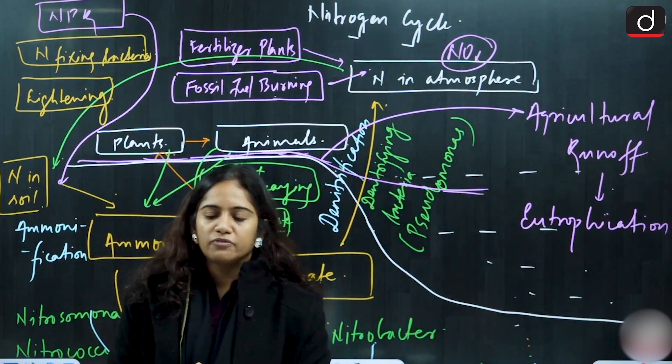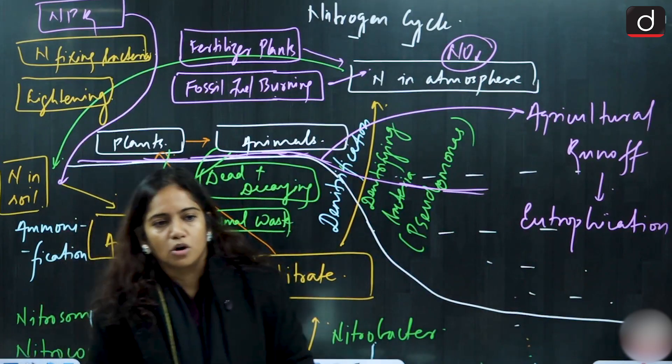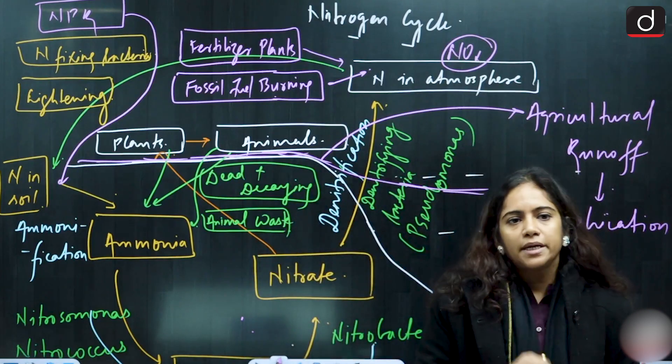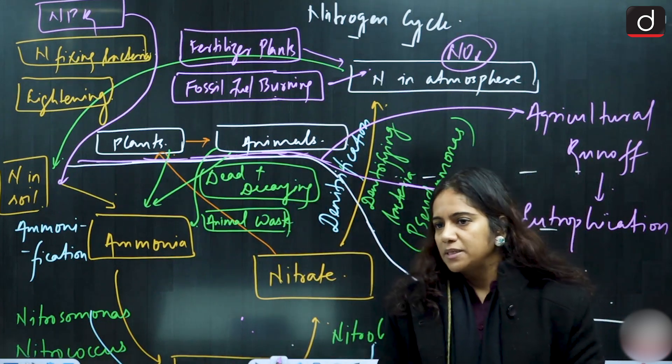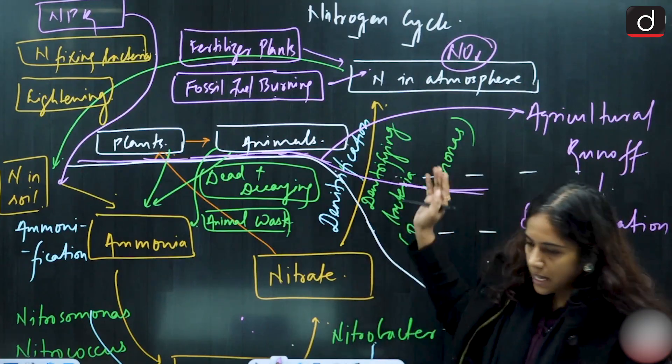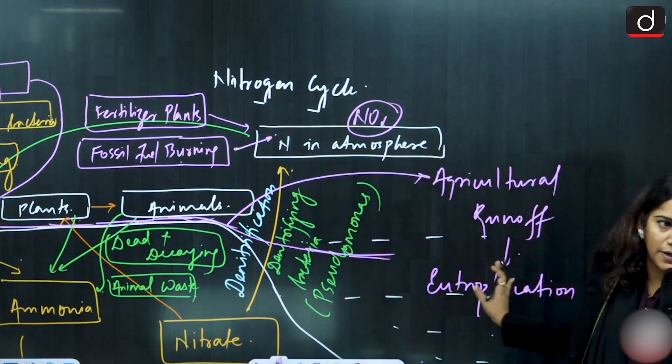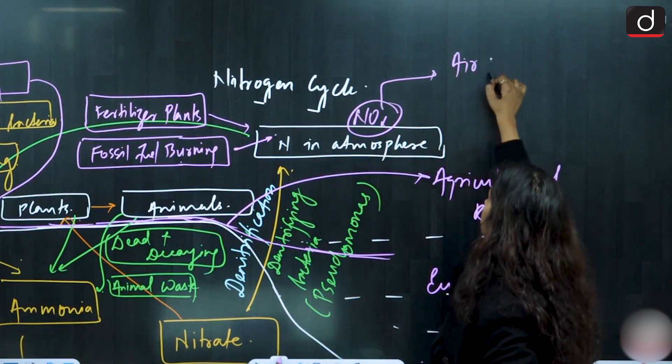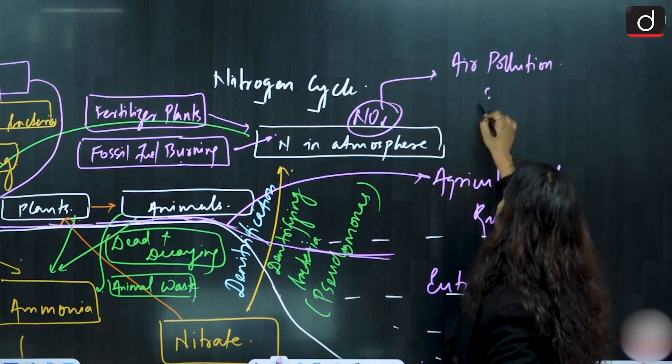Secondly, these air pollutants that is oxides of nitrogen are responsible for one more thing which is known as smog. What we are experiencing because of oxides of nitrogen is photochemical smog, which happens mostly in tropical countries in the presence of sunlight. So here we have one problem in water bodies that was harmful algal blooms. Second problem in the air was air pollution directly due to oxides of nitrogen. Secondly, smog formation.